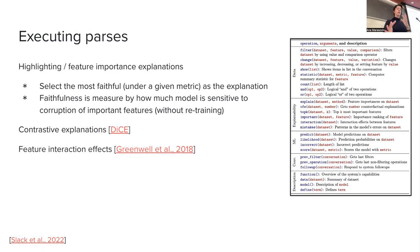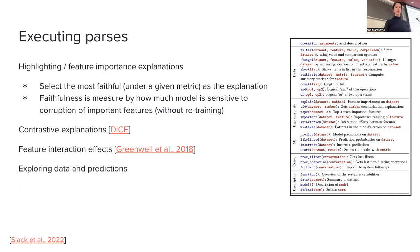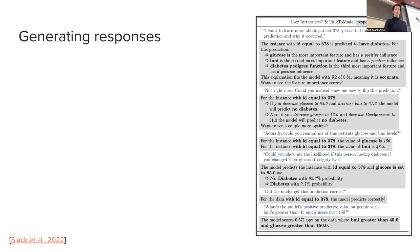They also have a way to show feature interaction effects. Remember when we talked about attention-based visualizations as a way to show feature interactions — but because they work with a whole different type of inputs, they have different techniques there. They also allow exploring data and predictions, and more can be added to the grammar depending on what you deem important for your tasks and models.